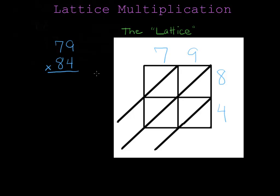My first box here is where the seven meets the eight. Seven times eight is fifty-six, and I'll write that in here. This box is where the nine meets the eight, and nine times eight is seventy-two. I'll write that in here. This box is where the nine meets the four, and that's thirty-six. And this box is where the seven meets the four, so twenty-eight goes in here. You can do these boxes in any order, but you must have all of them completed before you can begin the next step.